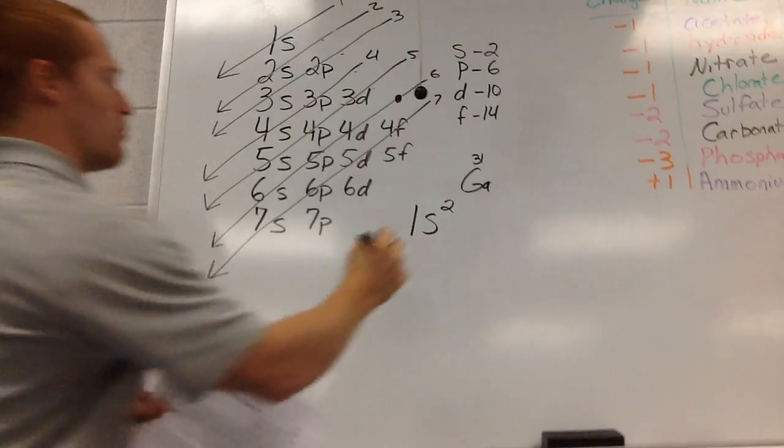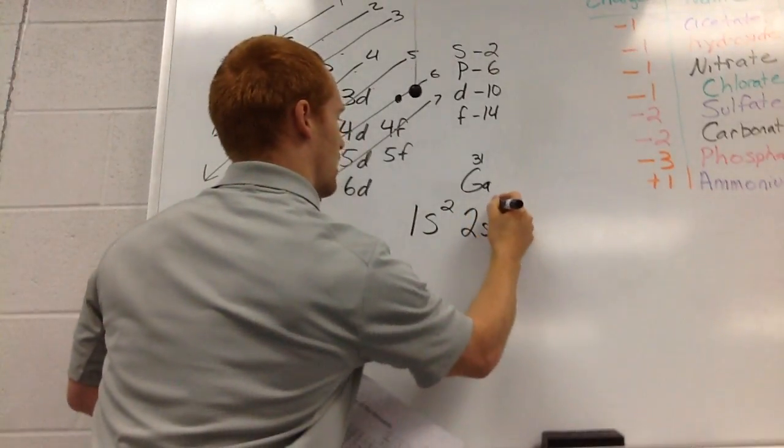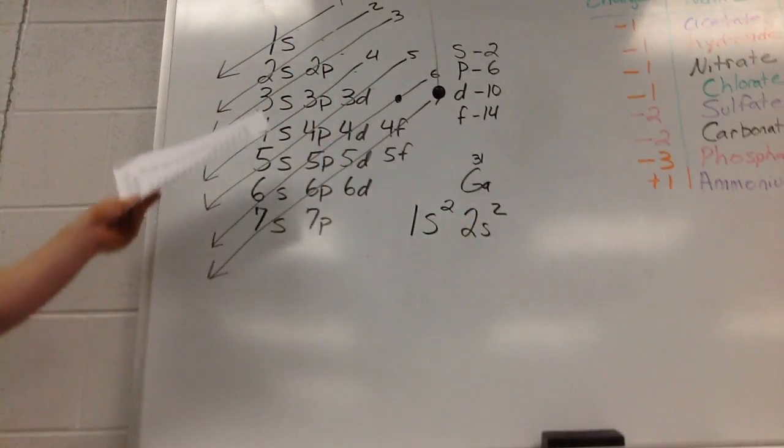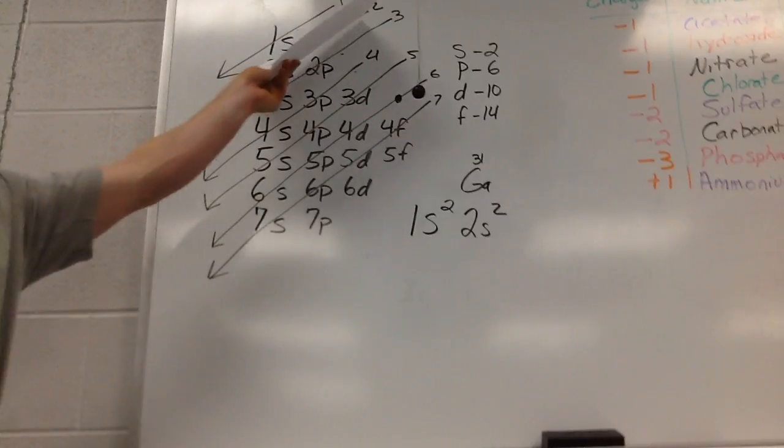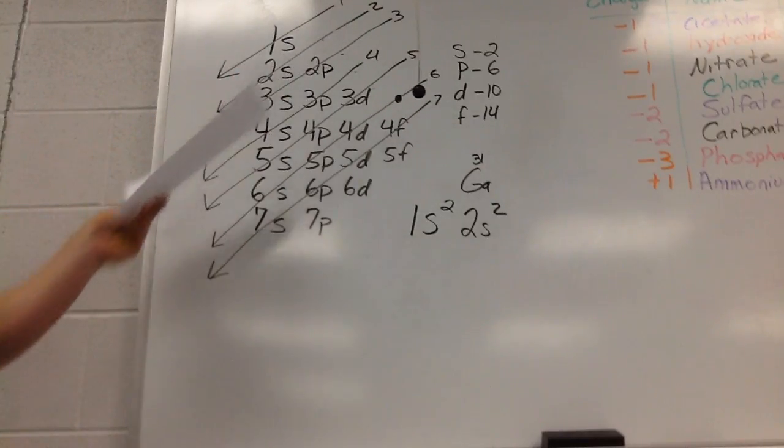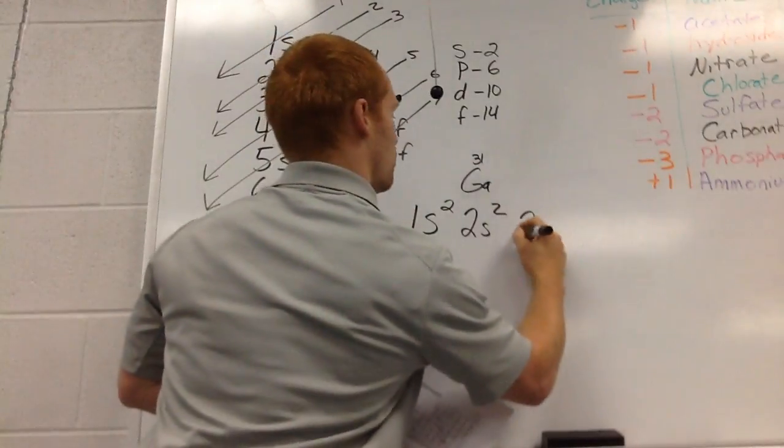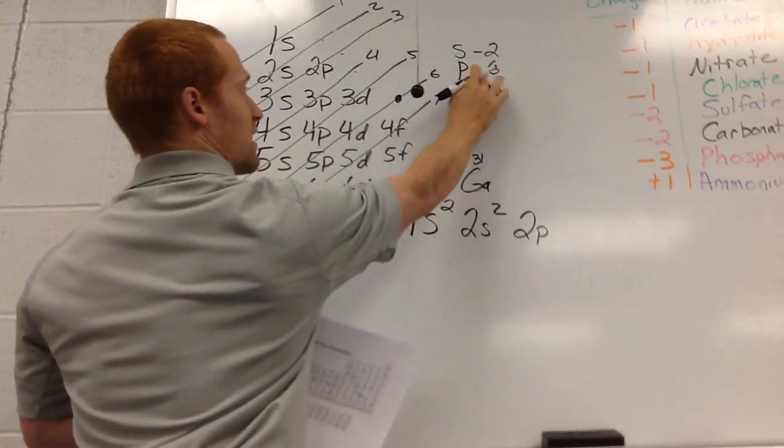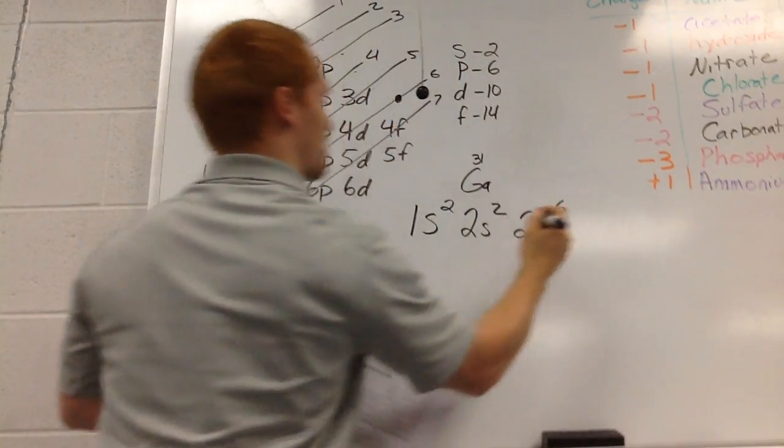So we need two of them because we need our exponents all to add up to 31. So we're done with arrow 1. Arrow 2 is 2s. Again, we're going to need all two of them in that shell. So we're going to use all two. Now we move on to our third arrow. It's going to be 2p. Notice we can have 6 in our p orbital. So we're going to need all six of them.